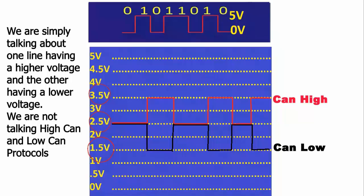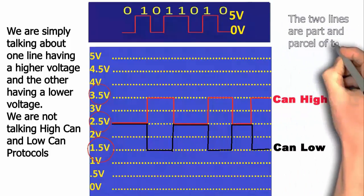Even though this protocol we are now discussing is actually high-speed CAN protocol, when we are talking about high and low CAN lines, we are not talking about two different protocols such as high-speed CAN protocol and low-speed CAN protocol. I know many people have been confused thinking these lines run two different protocols, but it is not the case.